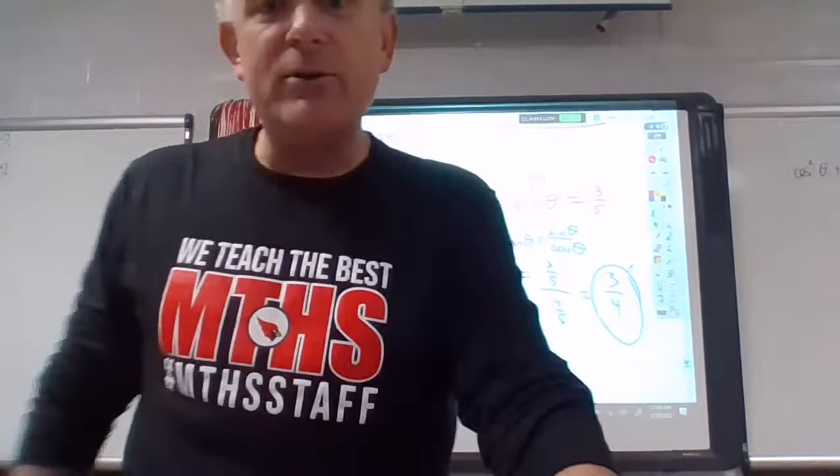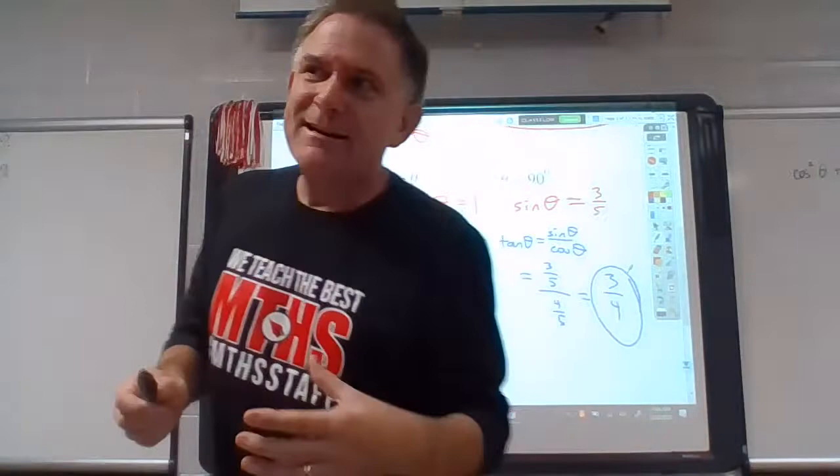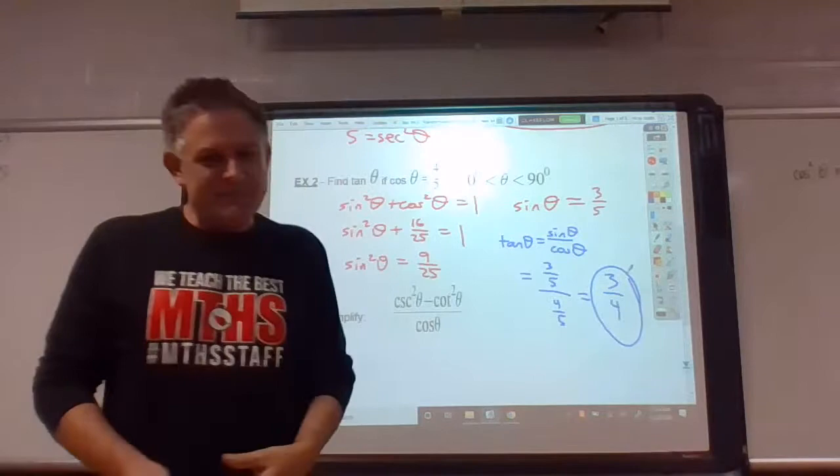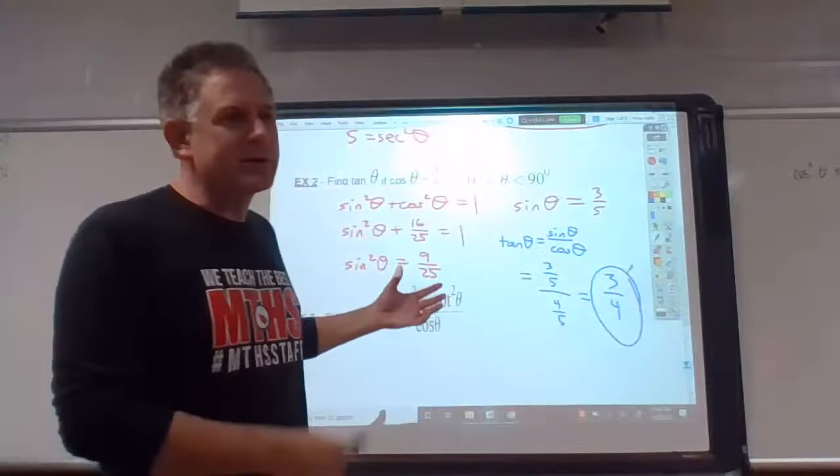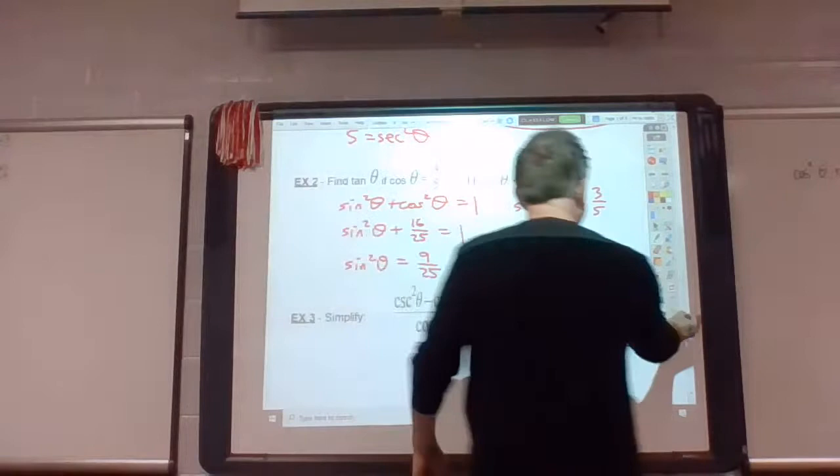The other three examples in the notes are going to be take something yucky looking and simplify it. If I give you a fraction like eight-twelfths, y'all are pretty good at making that two-thirds, right? It's a similar concept, kind of. We're going to take stuff that's disgusting looking and try to make it look simpler. Okay, so the first one you will notice, cosecant squared minus cotangent squared over cosine. Yikes.